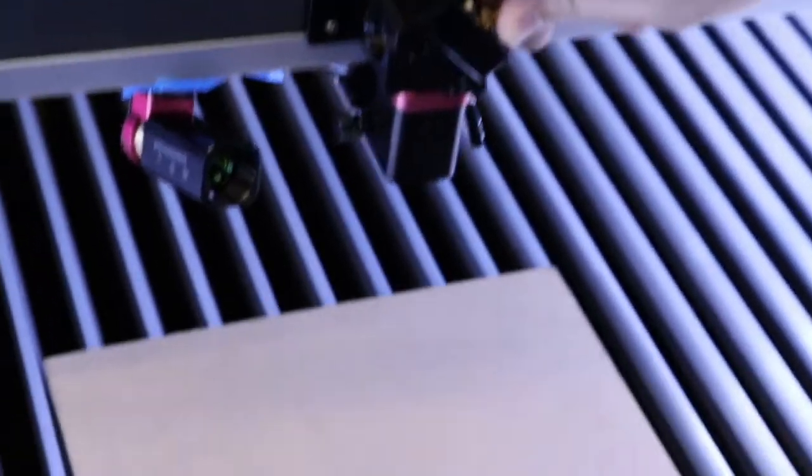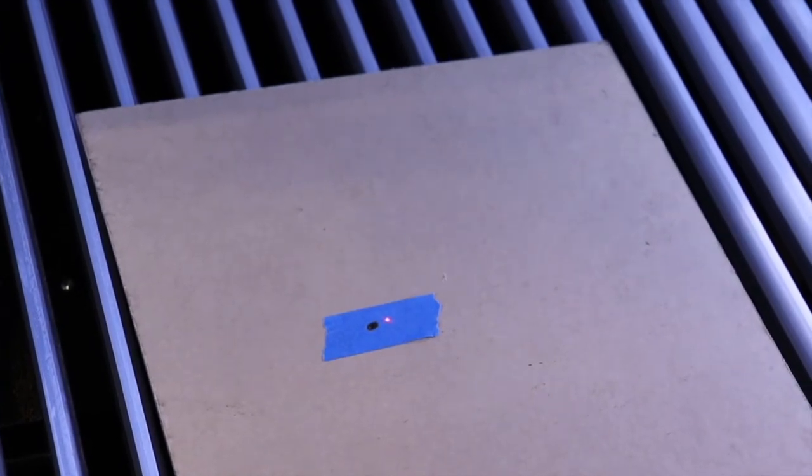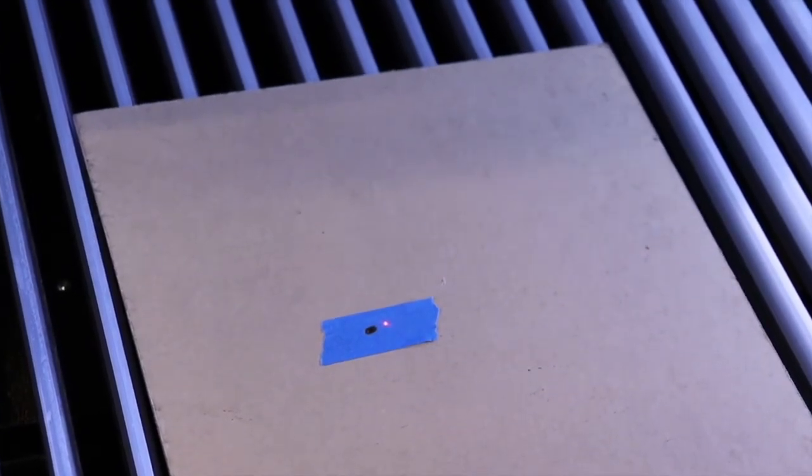With the top knob, clockwise will move the beam up and counterclockwise will move the beam down. The bottom knob, clockwise will move the beam right and counterclockwise will move the beam left.